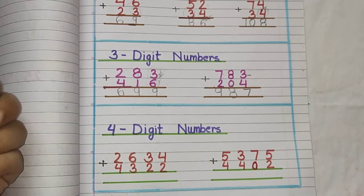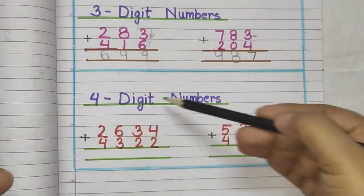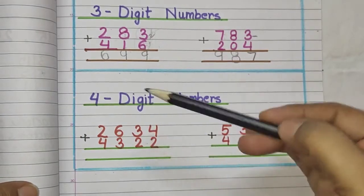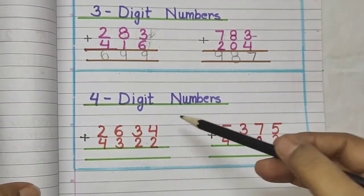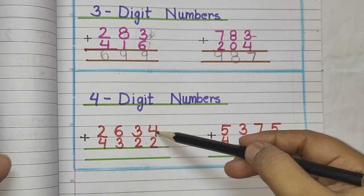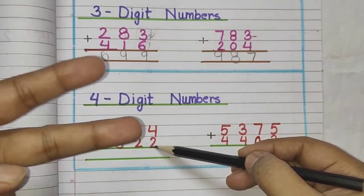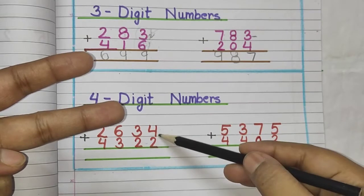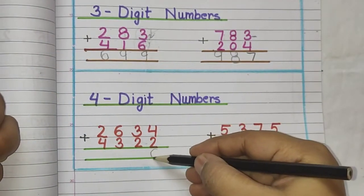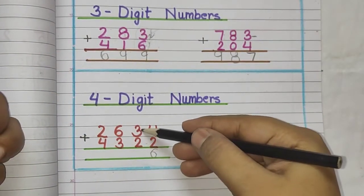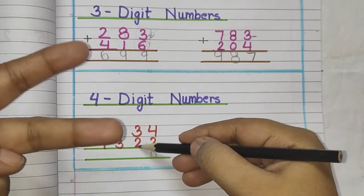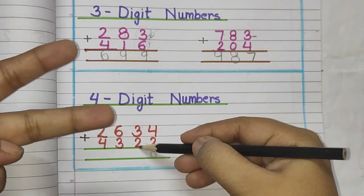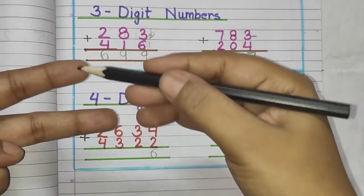Now we will start with larger digit numbers — same method applies. So first: four, we add two fingers. After four: five, six — the answer is six. Second one is three, how many fingers? Two. After three: four, five — the answer is five.